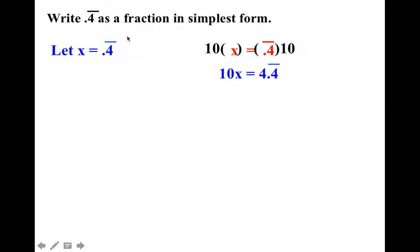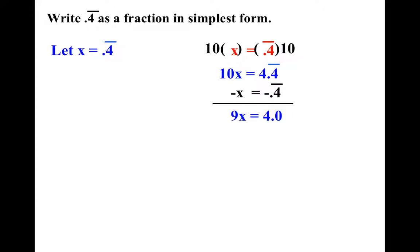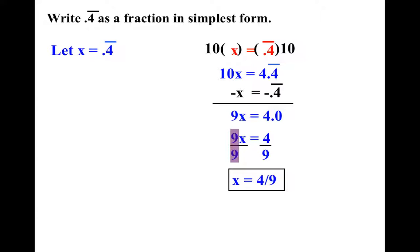That gets me a new equation: 10x equals 4.44444444. What if I subtract out the original equation? Well, 10x minus 1x is 9x. And when I subtract out all these 4's, they become 0's. So I end up getting 9x equals 4. Simple one-step algebra — divide by 9 — and the fraction I didn't know is 4 over 9. If you don't believe me, take a calculator, go 4 divided by 9, and see what decimal you get.